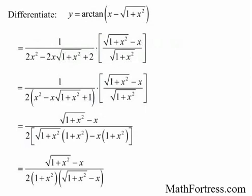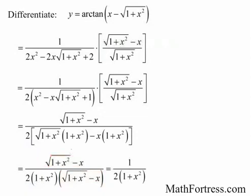Here, the square root of 1 plus x squared minus x cancels out with the expression in the denominator, giving us the final answer equal to 1 over 2 times the quantity 1 plus x squared.